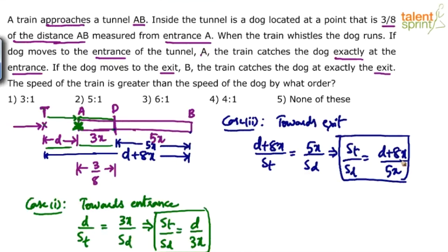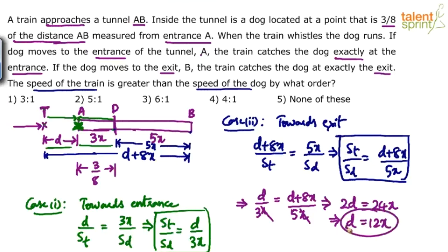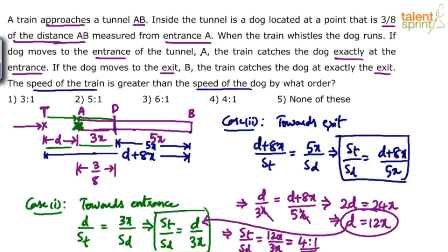We now have two equations for ST/SD. Since both equal the same ratio, we equate them: D/3x = (D + 8x)/5x. Cross-multiplying: 5D = 3D + 24x, so 2D = 24x, giving D = 12x. Substituting D = 12x back into Case 1: ST/SD = 12x/3x = 4. So the speed ratio is 4 to 1, which is option 4.